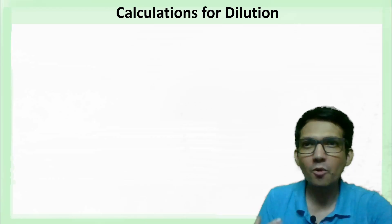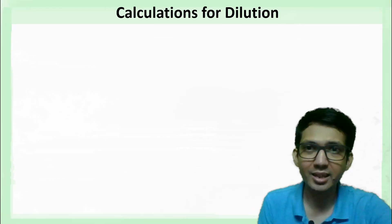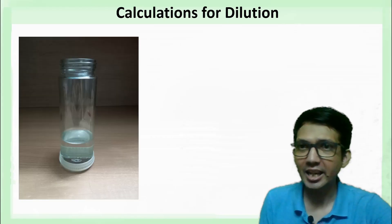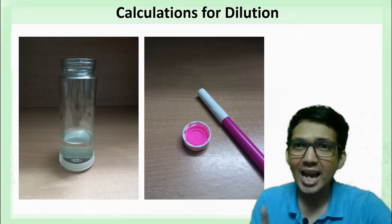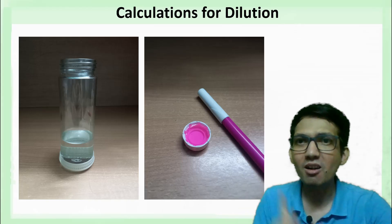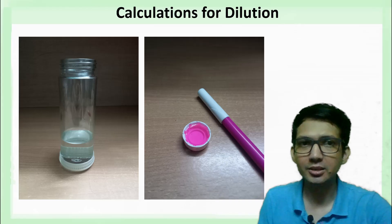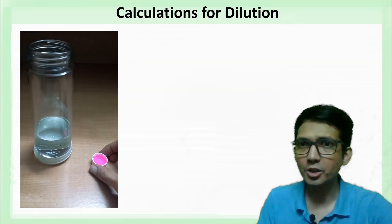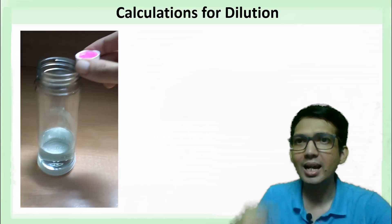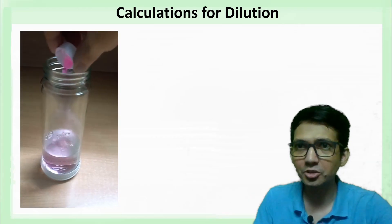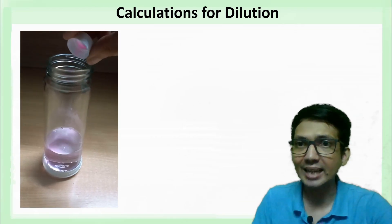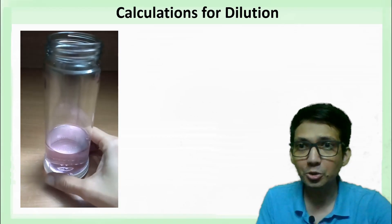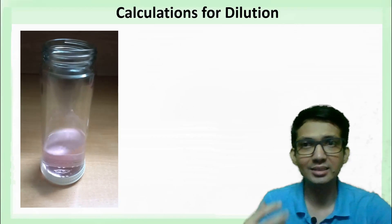Let's talk about calculations for dilution. Let's say you have taken some water, and to this water you are adding some color solution. As soon as you add the color solution to water, you can see it gets diluted — the intensity of color has decreased.